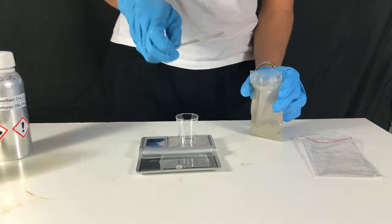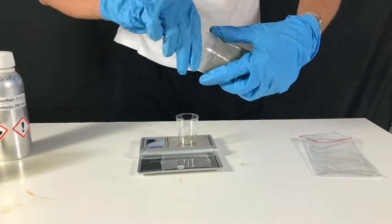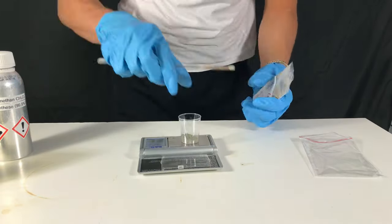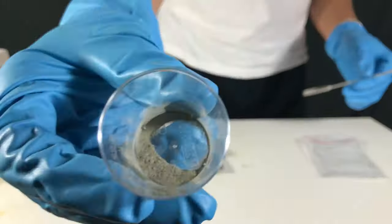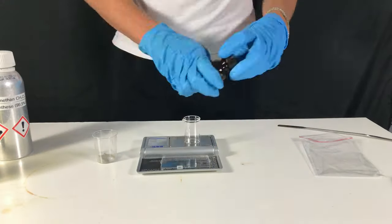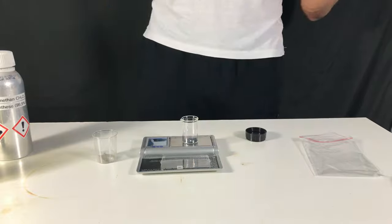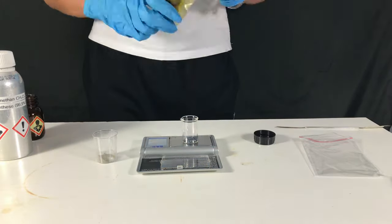We start off by weighing out the reagents. 2.97 grams of tin powder and also 12.75 grams of iodine.